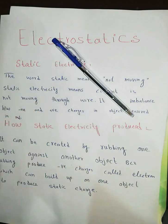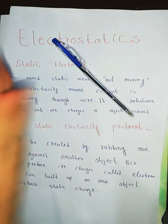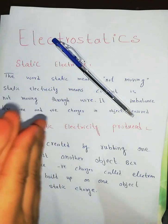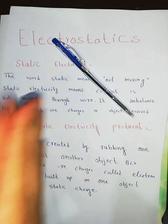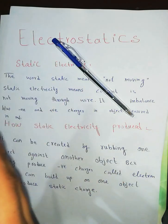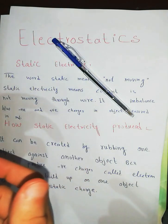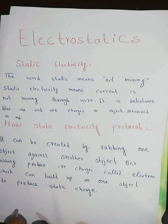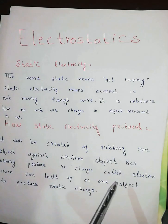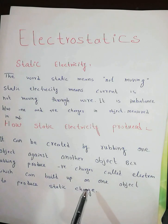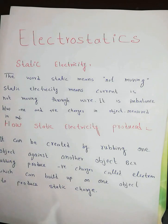For example, by rubbing my hand, energy is produced in the form of heat through friction. When we rub two objects against each other, some energy is produced, and negative charges — which we call electrons — build up on one object to produce static electricity. This process is known as triboelectricity.